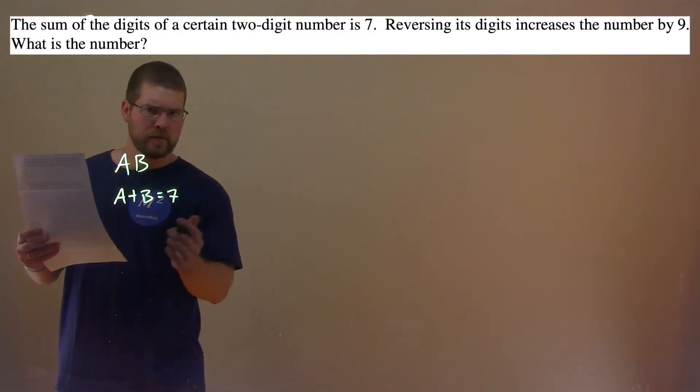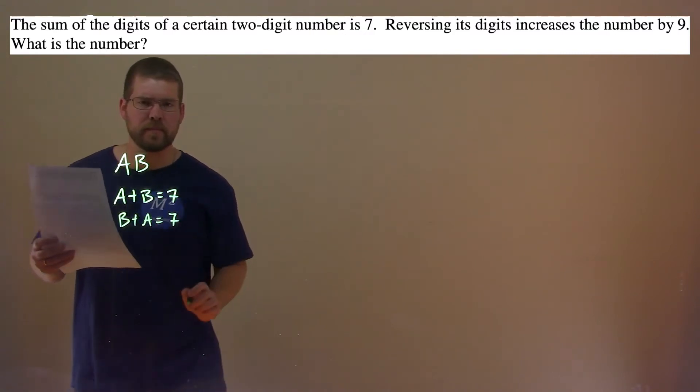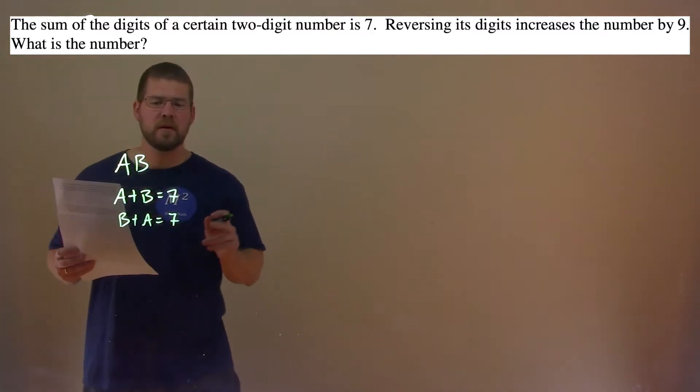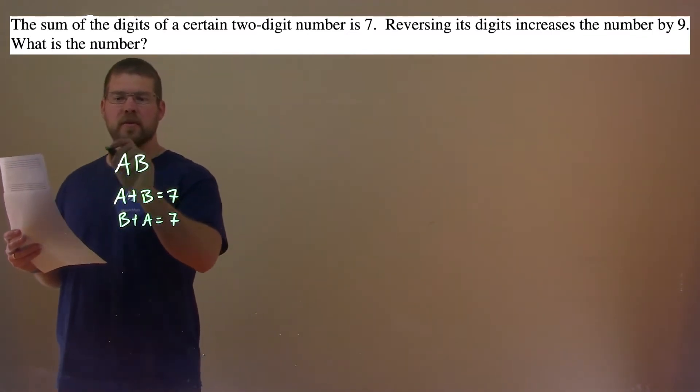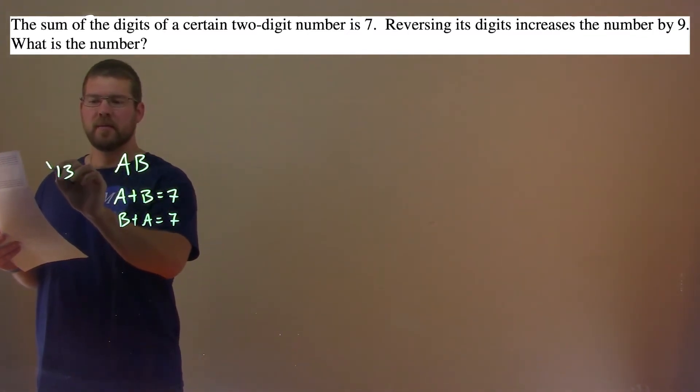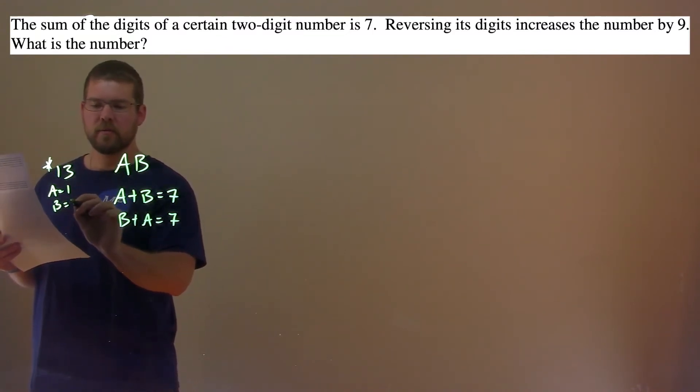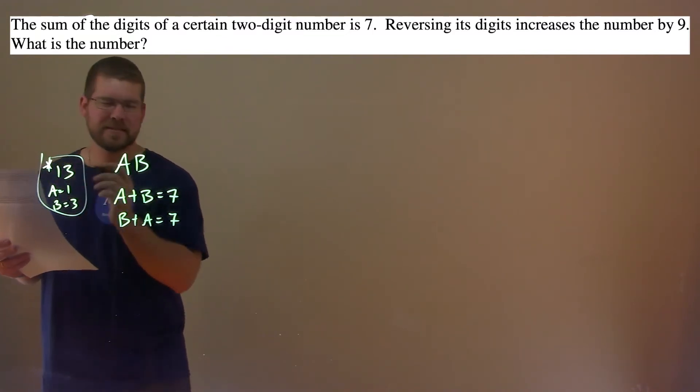And from our rules of addition, we know B plus A is also equal to 7. Now remember, A and B represent the digits. Like I said, it could be, for example, 13, right? If that's the case, A equals 1 and B equals 3. But that's not the answer.